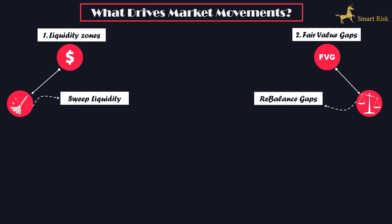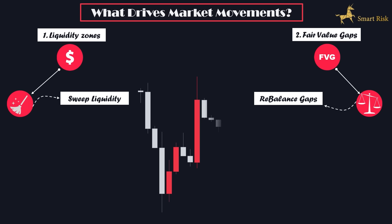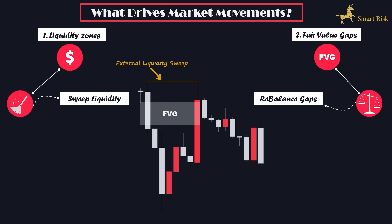The second factor revolves around fair value gaps. The market consistently shows a tendency to fill and rebalance the gaps present within it. You can notice that price sharply dropped with inefficiency, leaving a fair value gap behind. Subsequently, the price moved back up and filled the fair value gap. It also moved upward to clear out external liquidity. Once external liquidity was swept, the price reversed back down to fill the most recent fair value gap. This cyclical pattern reflects how the market operates, where price tends to both clear accumulated liquidity and fill fair value gaps.